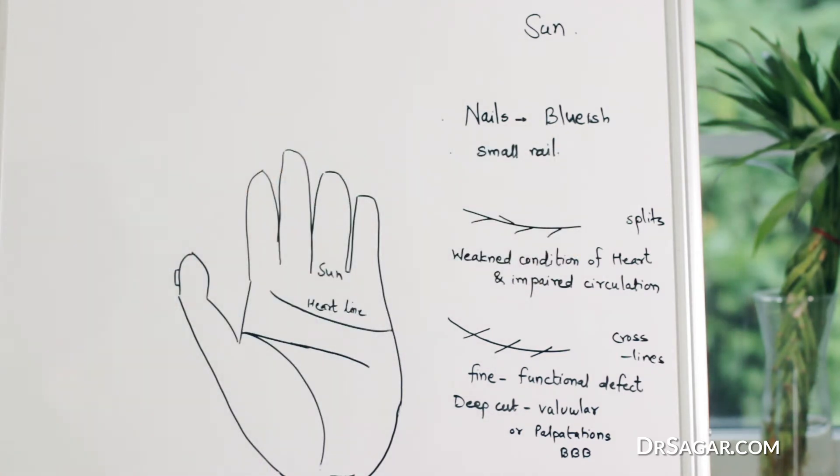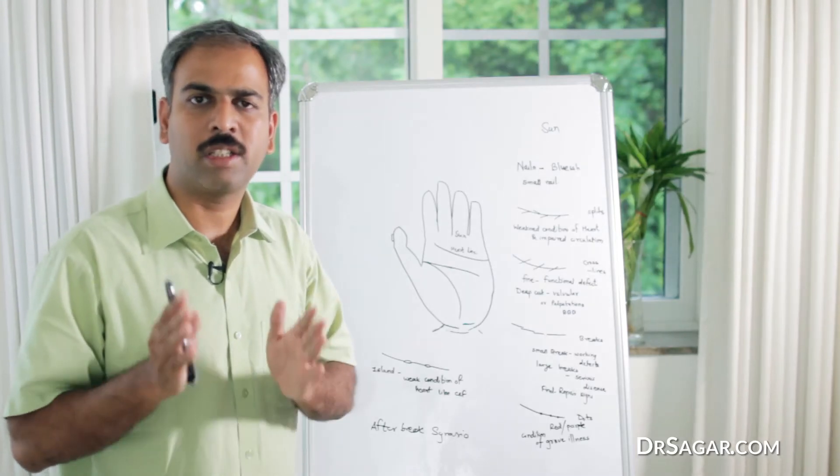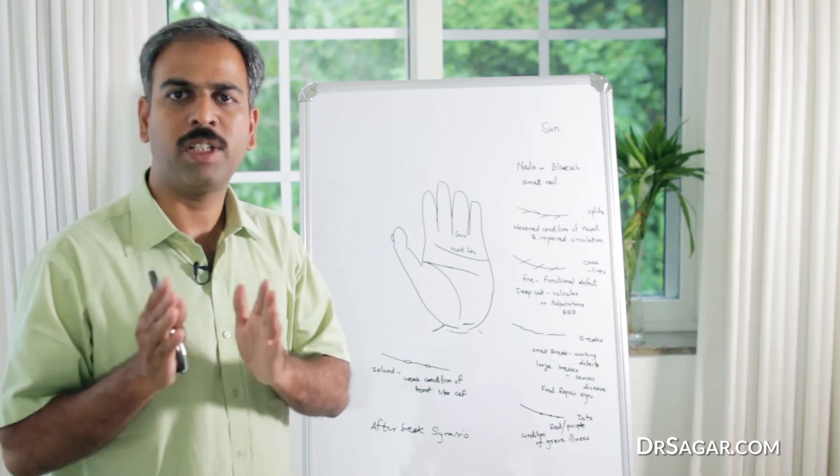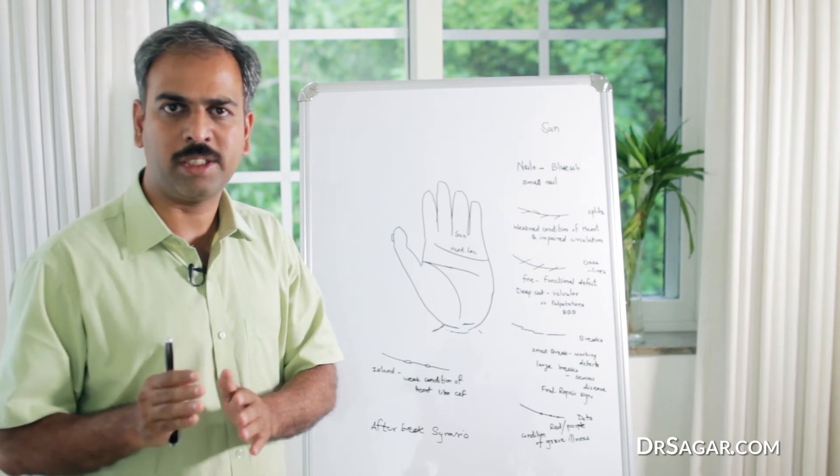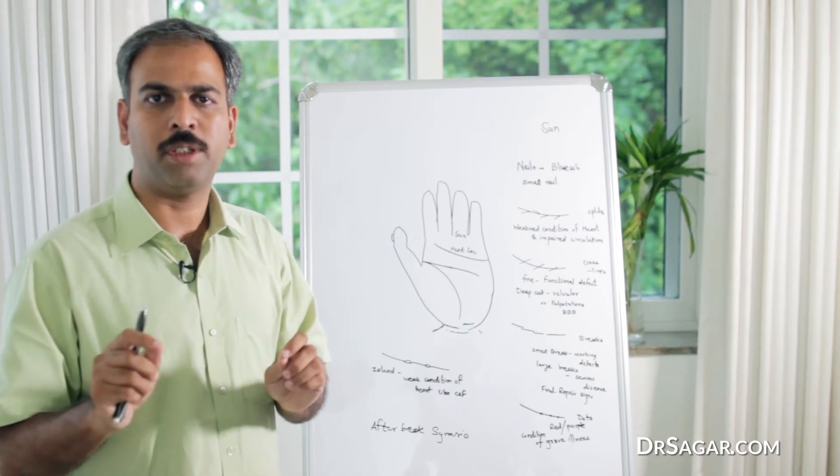Now we will see the heart line, which is the main line. The heart line is the condition and operation of the heart, the function of the heart. So regarding heart disease, we have to study the heart line very minutely.